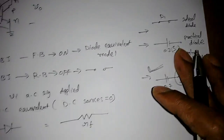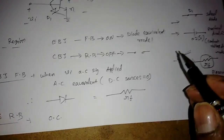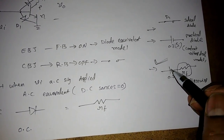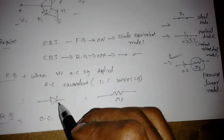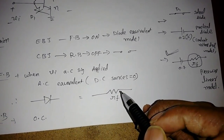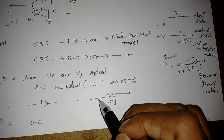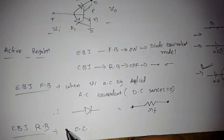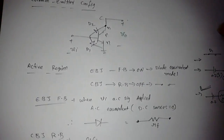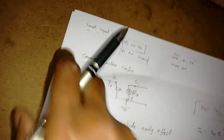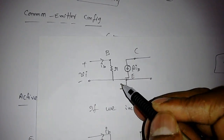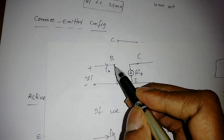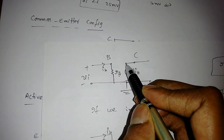When we apply AC signals, all DC sources are short-circuited. So the 0.7V drop becomes short, and the diode equivalent model for AC signals is simply the dynamic resistance RF, also called the forward resistance. The collector-base junction is reverse biased, so it is simply an open circuit. Between emitter and base there is forward resistance RF, and at the collector-base junction it is open circuit.